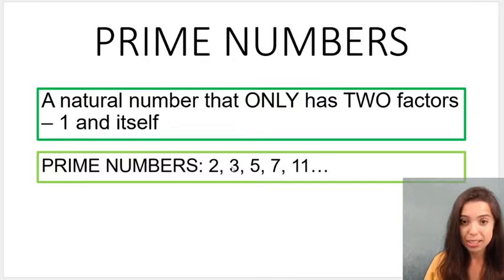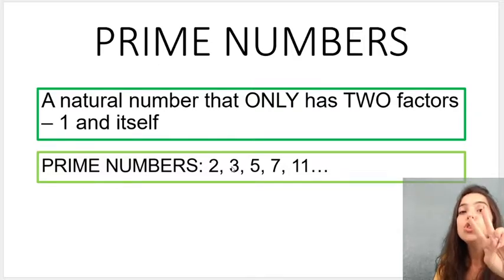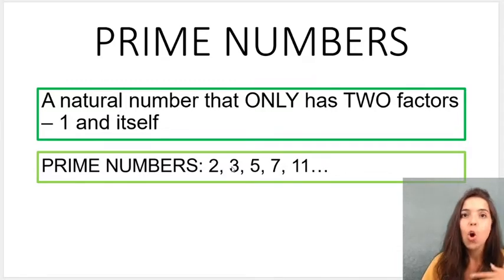Looking at prime numbers, prime numbers only have two factors and that's very important to remember: 1, the number 1, and itself.